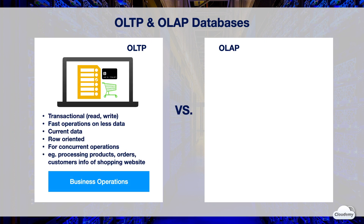OLTP stands for Online Transactional Processing. OLTP databases are used for transactional processes where frequent reads and writes are required. Applications use OLTP databases to support day-to-day business operations. OLTP databases allow users and applications to perform fast and frequent operations on fewer data. Most data stored in OLTP databases are current data, frequently updated with new records constantly inserted. Most OLTP databases have row-oriented datastore architectures, optimized for multiple concurrent operations. OLTP databases are widely used for e-commerce applications, web apps, and gaming applications.